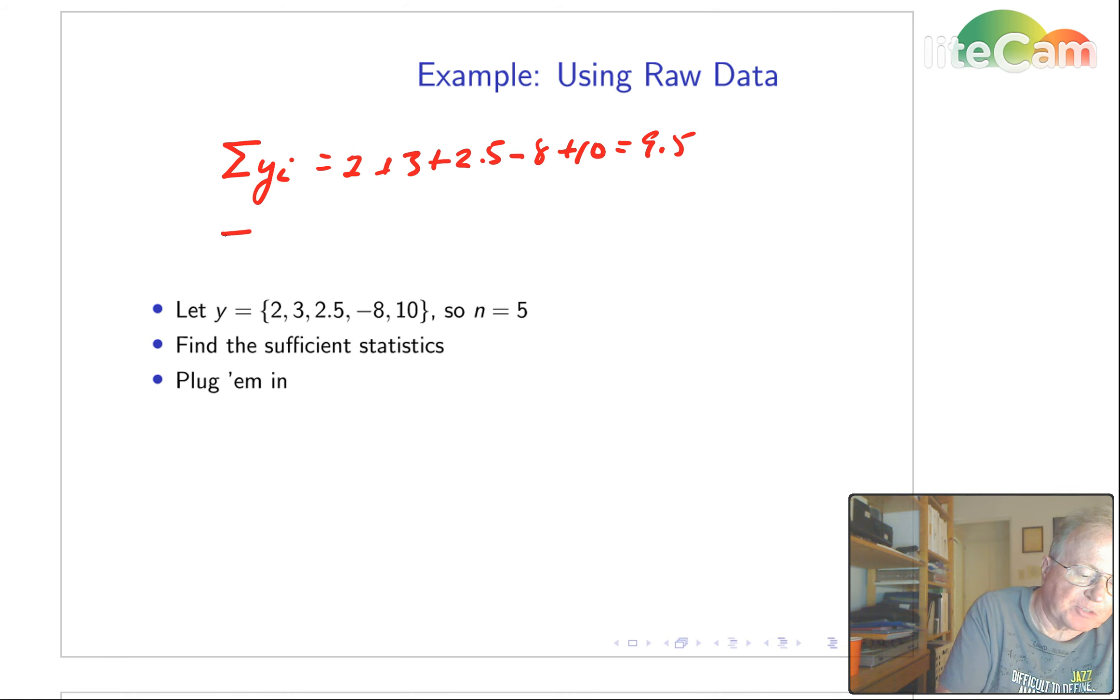Then we'll add up the squared numbers, and that'll be 4 and 9 and 6.25, plus 64 and 100, giving 183.25. Of course, n is 5.